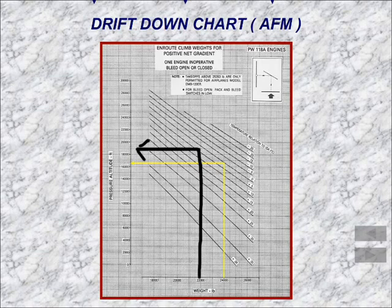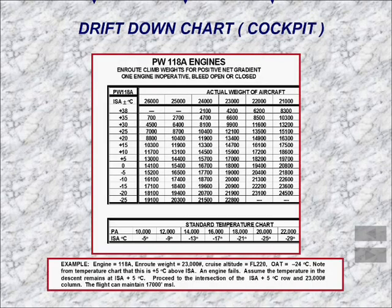Those are just examples of what the dispatcher can do to comply. What the crew will have is a drift down chart in the flight deck, so they can reference it if an engine fails in flight, figure out where the airplane is going to end up leveling off, and use that to determine their route — because obviously this happens unexpectedly while cruising along.